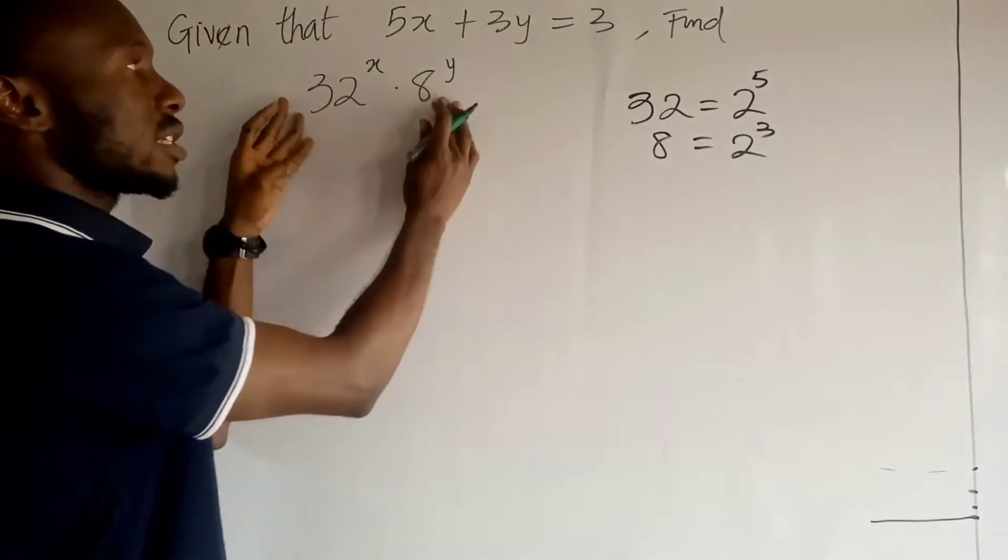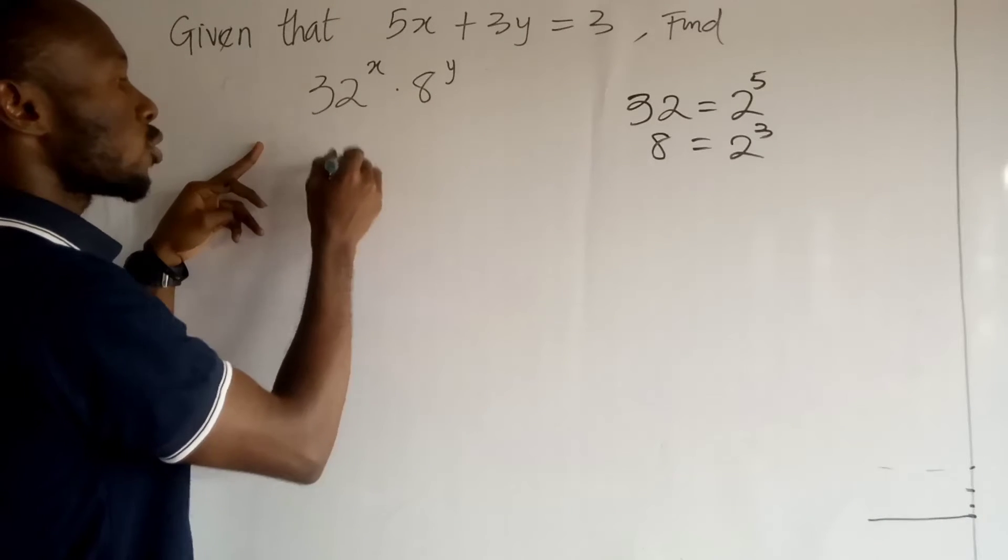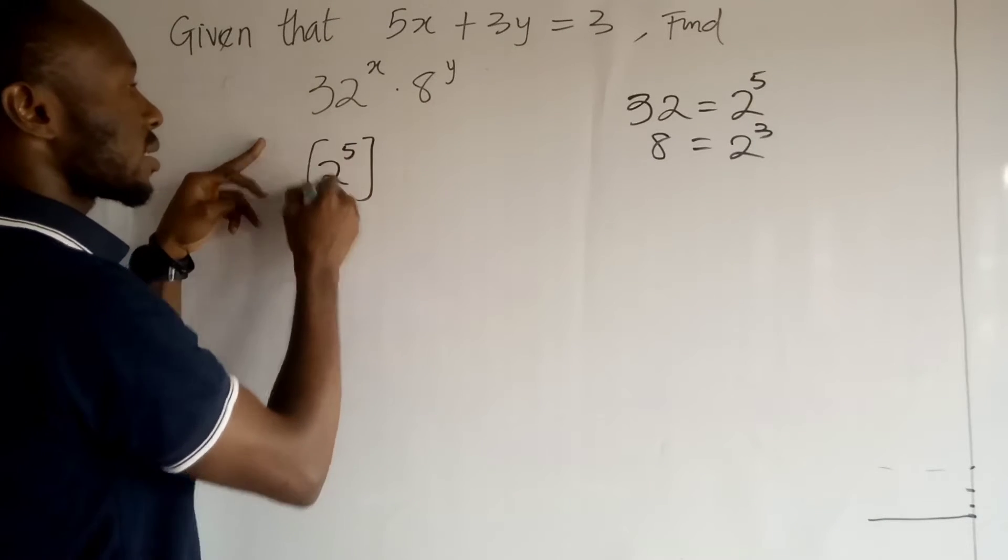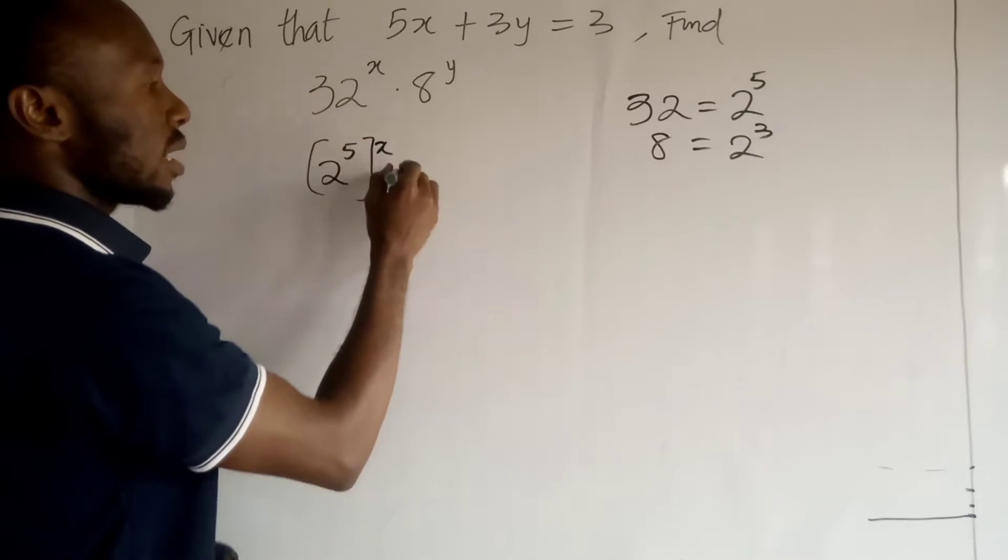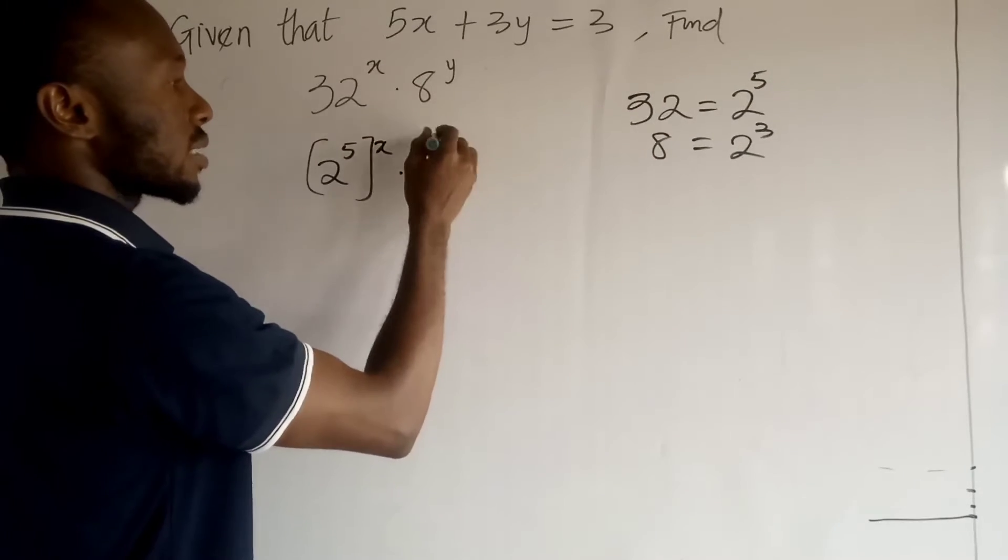So, in this idea, I'm going to change this expression to become 2 to the power 5 as 32, then remember, all to the power x times 2 to the power 3 as 8, then all to the power y.